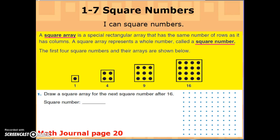So now we're going to answer question 1 on page 20. It says: draw a square array for the next square number after 16. So if 16 is a four by four array, we need to draw a five by five array.